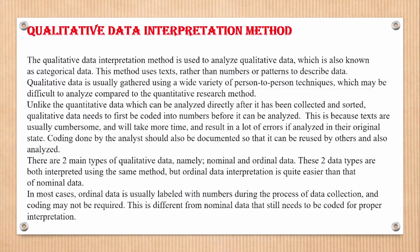The coding done by the analyst should be documented so that it can be reused and analyzed by others. There are two main types of qualitative data: nominal and ordinal data. These two data types are both interpreted using the same method, but ordinal data interpretation is quite easier than that of nominal data. In most cases, ordinal data is usually labeled with numbers during data collection, so coding may not be required. This is different from nominal data, which still needs to be coded for proper interpretation.